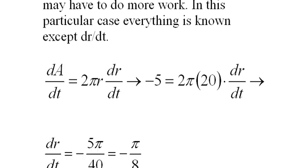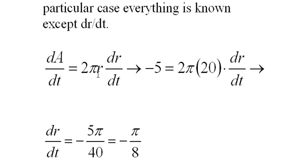And so here we do our calculations. Here's the original implicit differentiation. I know dA/dt is negative 5 and I know r is 20 and notice there's only, of course, pi is not a variable. Remember, it's a constant. We only have one thing we don't know, dr/dt. And when we solve for dr/dt, we get negative pi over 8.